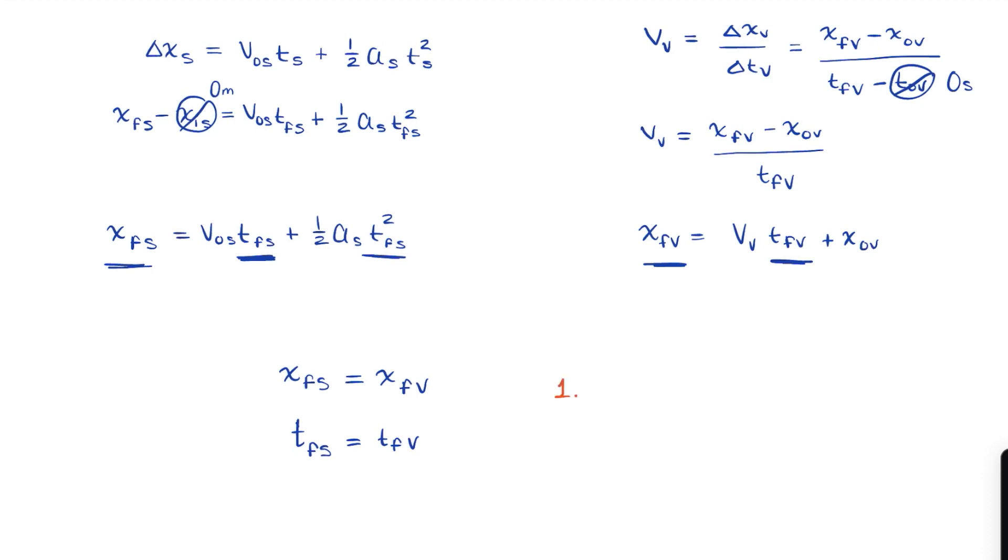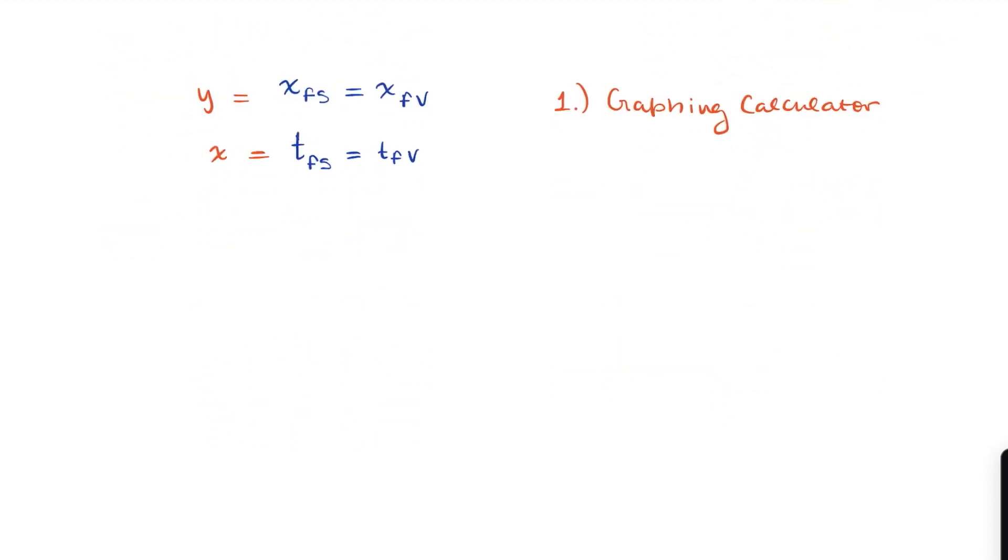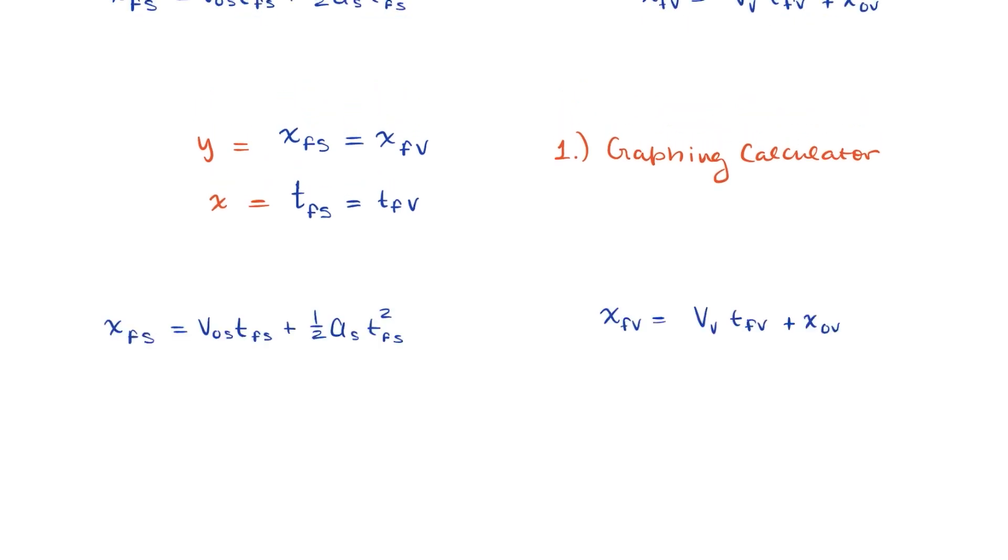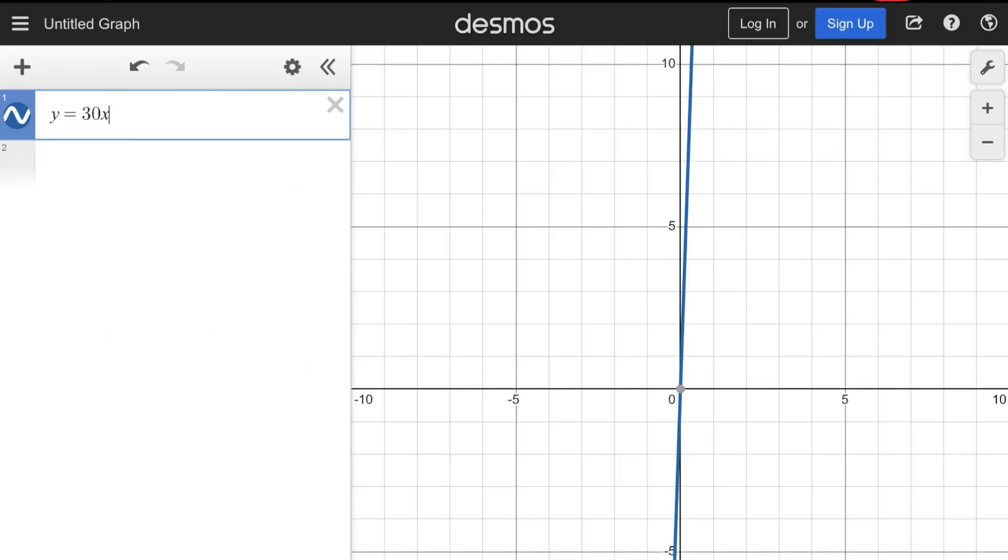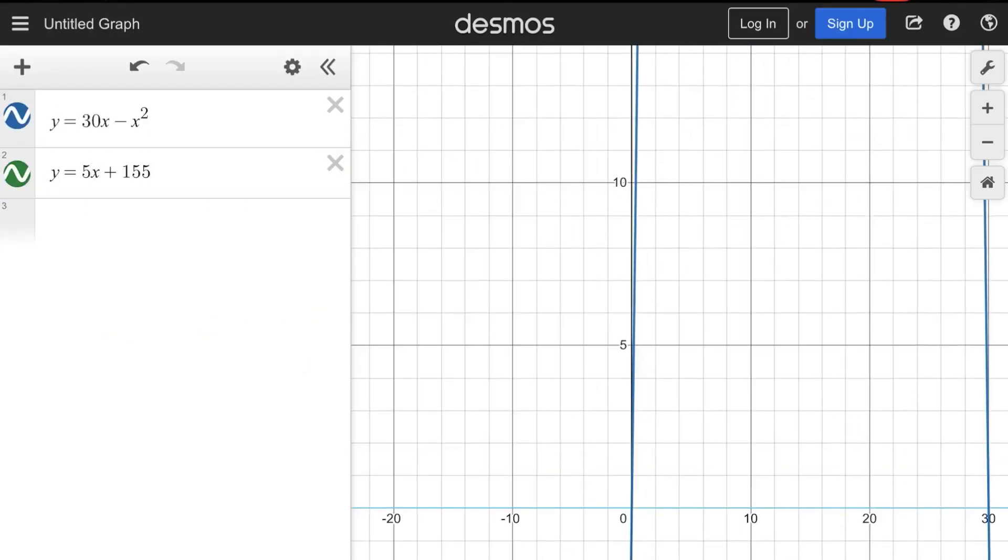So there are two main methods to go from here. First is by using a graphing calculator. Here we can set the final positions as y, the output, and time as x, our input value. So let's input those variables and our values into our equations. This one becomes y equals 30 times x plus 1 half times negative 2 times x squared. And this one becomes y equals 5x plus 155.